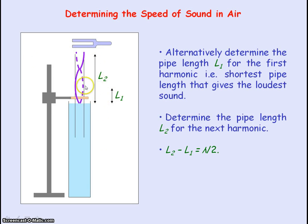The difference between the pipe lengths L2 and L1 will equal the distance from one anti-node to the next anti-node, which is half a wavelength. So the wavelength will equal two times the difference in pipe lengths.